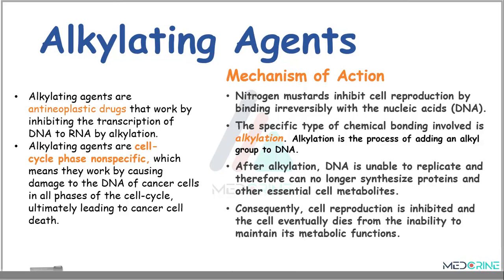The nitrogen mustards work by inhibiting cell reproduction by binding irreversibly with the nucleic acid, specifically at the DNA. The specific type of chemical bonding involved is alkylation. Alkylation is defined as the process of adding an alkyl group to a DNA molecule. After this alkylation process, the DNA is unable to replicate and therefore can no longer synthesize proteins and other essential cell metabolites needed by the cancer cells. Cell reproduction is inhibited and eventually the cell dies from inability to maintain its metabolic functions.